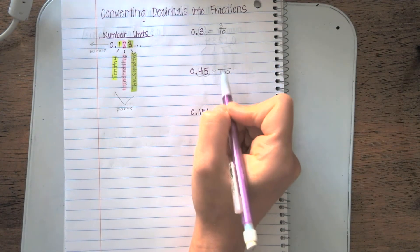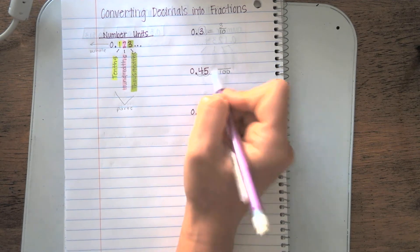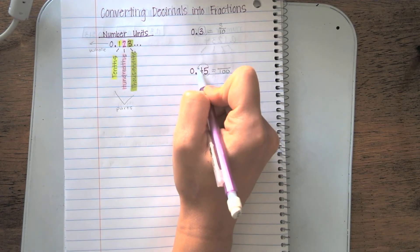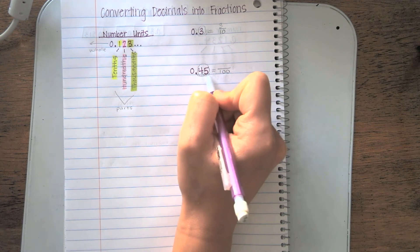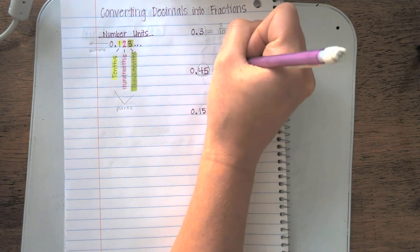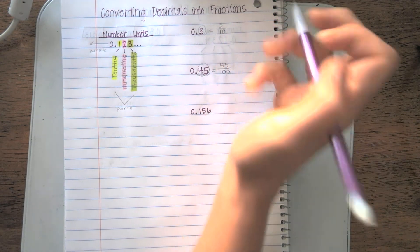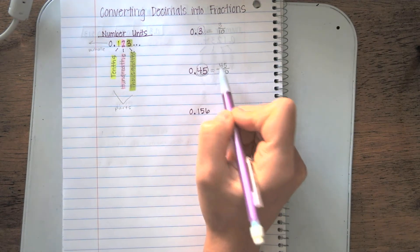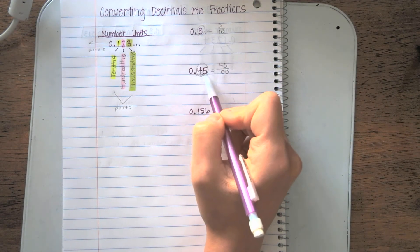Now, what number goes in my numerator? That's right, all the digits to the right of that decimal. I have two digits, 45. So I'm going to write 45. 45/100 is the same as the decimal, 0.45.